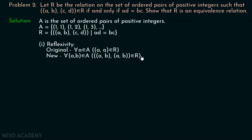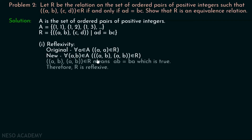This is our new definition. What is the meaning of ((A, B), (A, B)) belonging to R? It means A times B must equal B times A — that is, AB equals BA. According to the relation definition, when this ordered pair belongs to R, AD must equal BC, and here that becomes AB equals BA. Is AB equal to BA? Obviously this is true. Therefore R is reflexive.